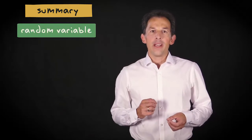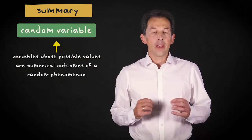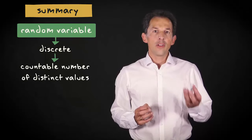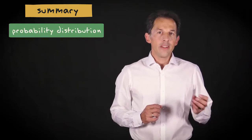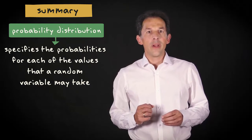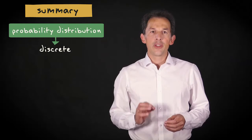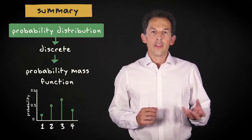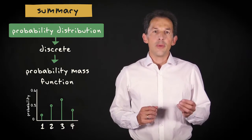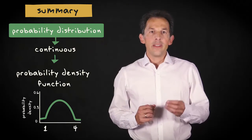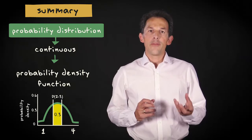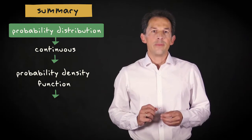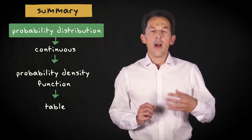Let me summarize what I hope you understood from this video. A random variable is a variable whose possible values are numerical outcomes of a random phenomenon. A random variable is discrete if it can take only a countable number of distinct values, and it is continuous if it can take an infinite number of possible values. A probability distribution specifies the probabilities for each of the values that the random variable may take. A probability distribution of a discrete random variable is called a probability mass function, and gives probabilities on the y-axis. A probability distribution for a continuous random variable is called a probability density function, and it gives probability densities on the y-axis. In this case, probabilities are given by the surface area under the curve within a specified interval. A probability density function can exist in the form of a table, a graph, and an equation.